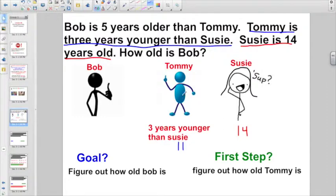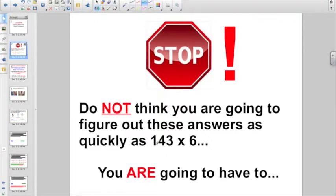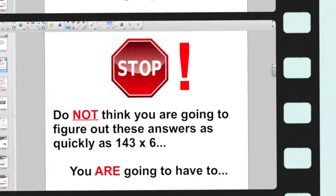So, once I figure out how old Tommy is, because that was the first step, let's go and figure out Bob. Bob, they're saying, is five years older than Tommy. Well, we just figured out my first step, that Tommy is 11. So, Bob's five years older than him. What's five years older than 11? Bob would be 16. You're going to have to break it down step by step and think. And, again, you are not going to figure these out as quickly as 143 times 6. This is serious reading problems.